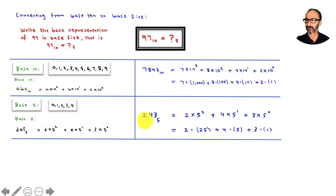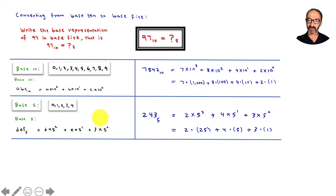Take 243 base 5 — notice I don't say it as 'two hundred forty-three'; I say '243 base 5.' That means 2 times 5 to the second, plus 4 times 5 to the first, plus 3 times 5 to the zero. Same concept as base 10, but we're not used to it, which is why students often slow down when adding and subtracting in base 5.